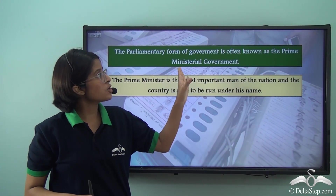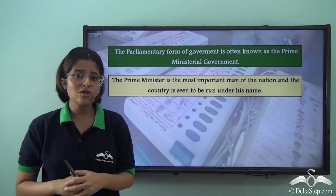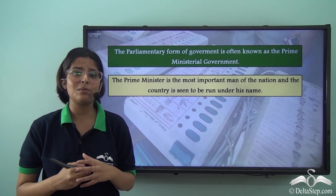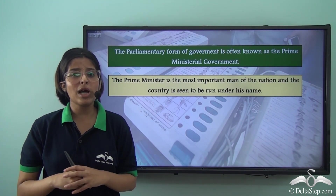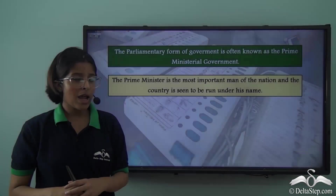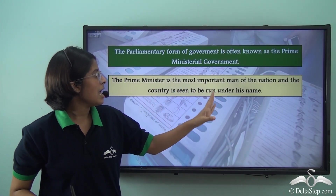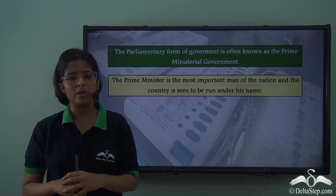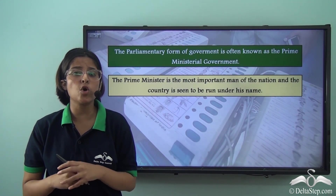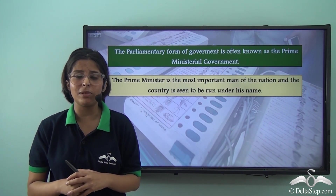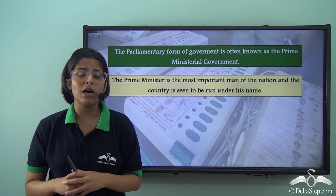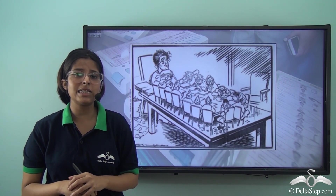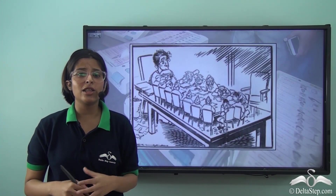The Prime Minister signs deals and agreements with several international bodies and foreign nations regarding peace, global warming, security and several other issues. The parliamentary form of government is often known as the Prime Ministerial government, because the Prime Minister is the chosen leader of the country and all the people together elect the party whose leader becomes the Prime Minister. He is the most important person of the nation, with a position of great prestige and power. His power and prestige stems not only from constitutional powers but also from his personality, charisma and leadership skills. India has had magnetic personalities as Prime Ministers such as Jawaharlal Nehru, Indira Gandhi or Atal Bihari Vajpayee.